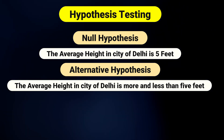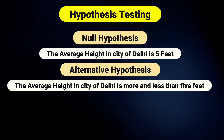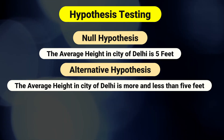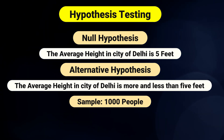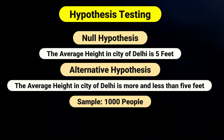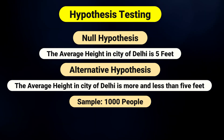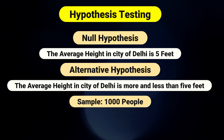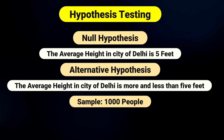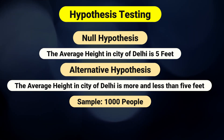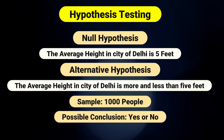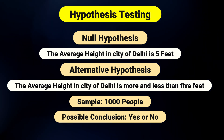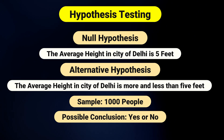Now you can't measure every person in the city because that's way too many people. So you measure a small group, let's say 1000 people. This small group is your sample that is representative of the larger population of Delhi. You then use the data from this smaller group for testing your hypothesis and come to a conclusion whether the average height of Delhi is 5 feet or more. And in a nutshell, this entire process is what is called hypothesis testing.